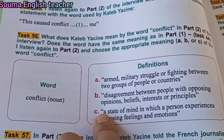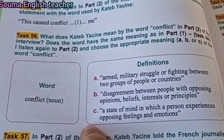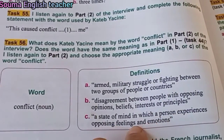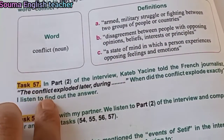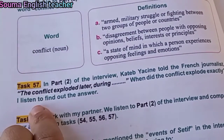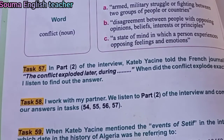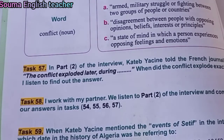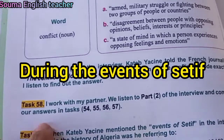The answer here is C, because he said there was an internal conflict inside him — he means internal struggle. Task 57: The conflict exploded later during — meaning when did his internal conflict explode? Katib Yassine says: 'The conflict exploded later during the events of Setif.'